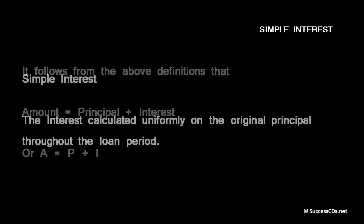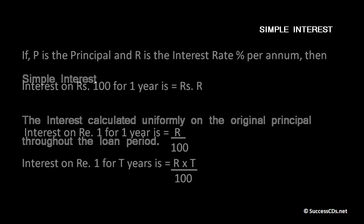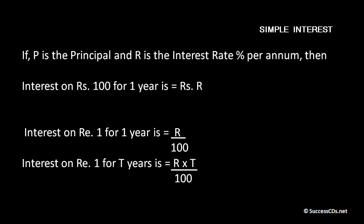Simple interest or SI. The interest calculated uniformly on the original principal throughout the loan period is called simple interest. That is, if P is my principal, R is my interest rate percent per annum, then interest on rupees 100 for one year will be rupees R.